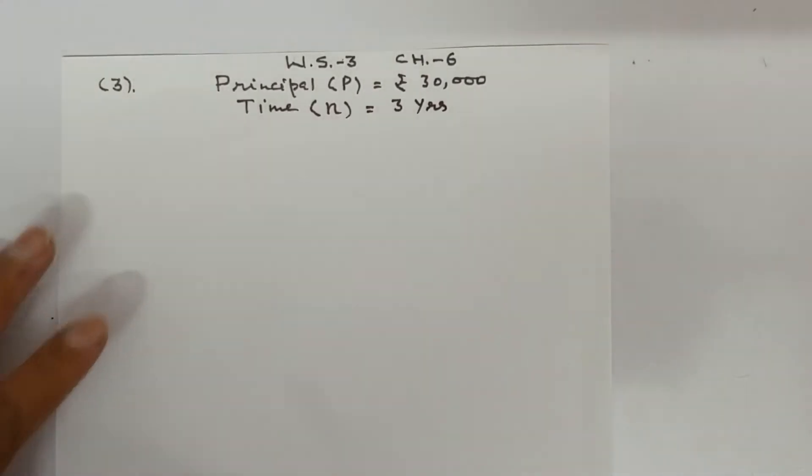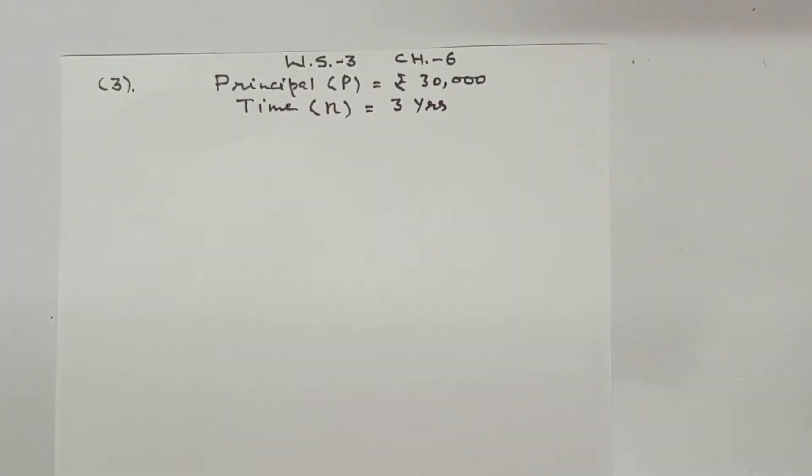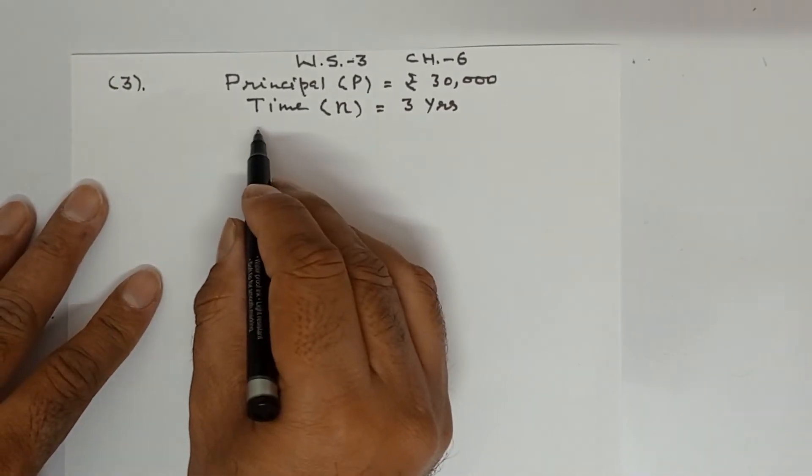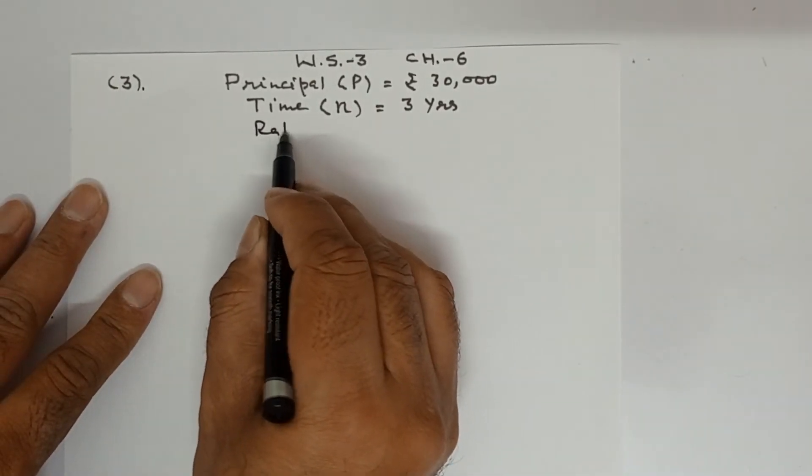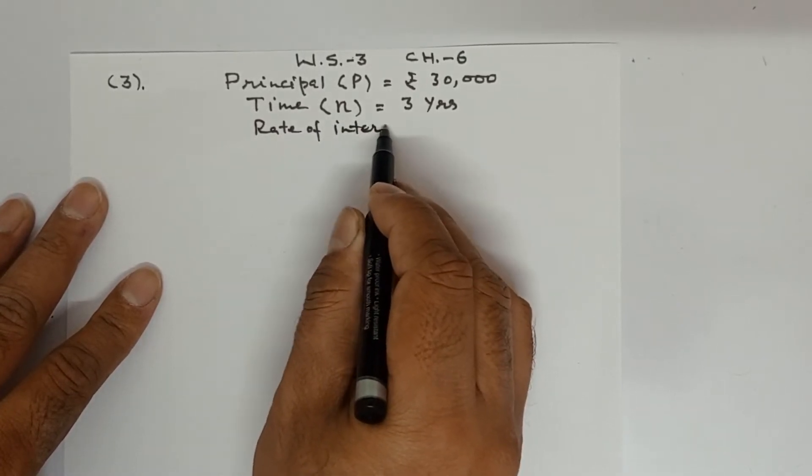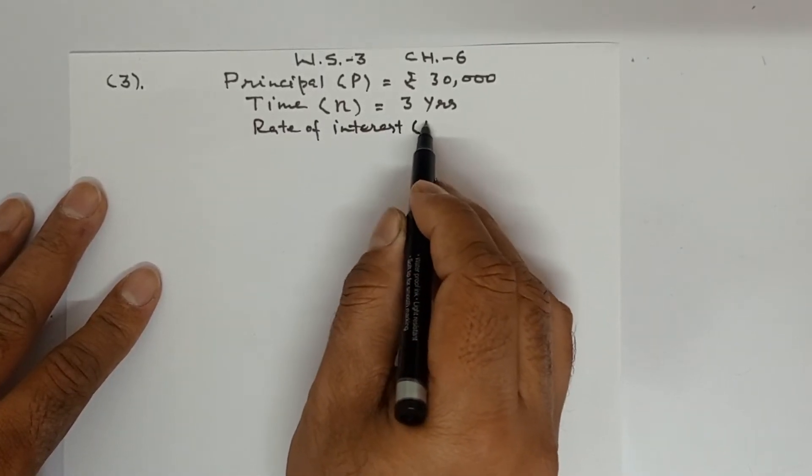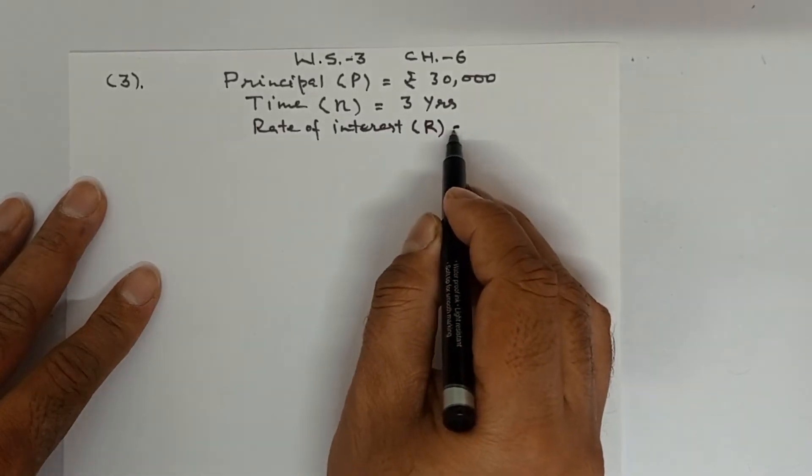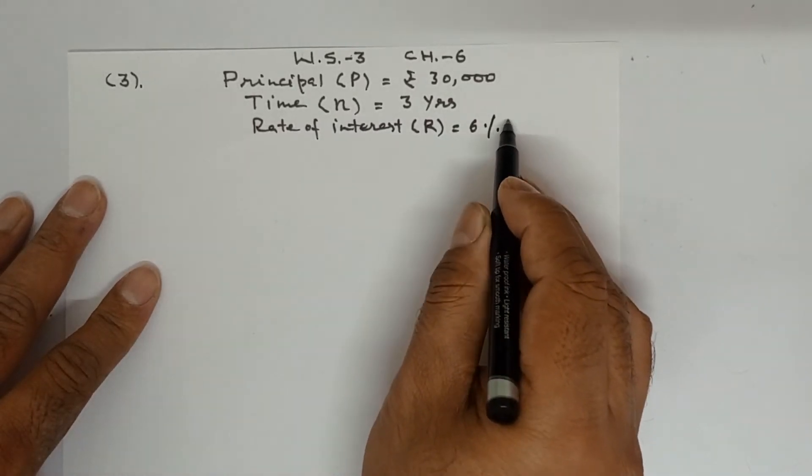Further we read the statement. If the rate of interest is 6% per annum compounded annually, annually word is written. So rate of interest is equal to denoted by R. It is 6% per annum.